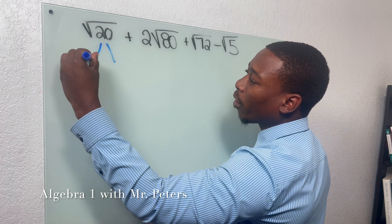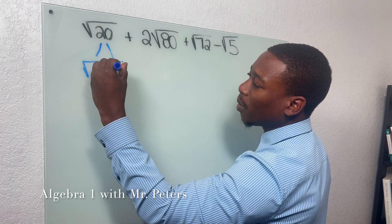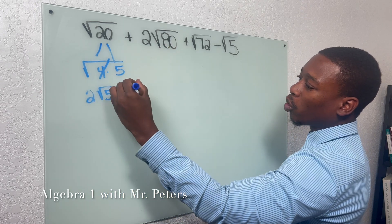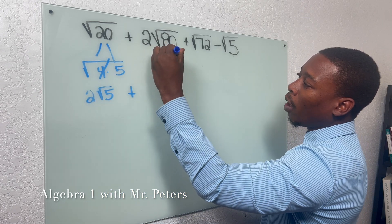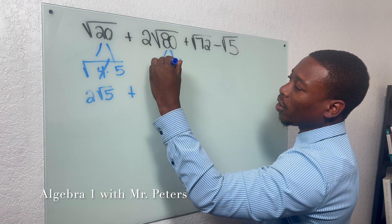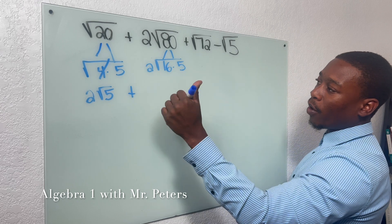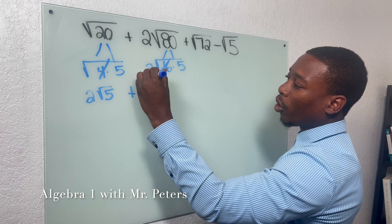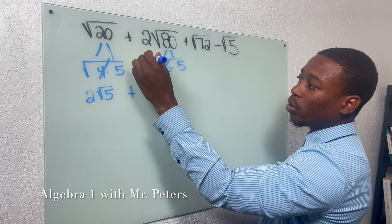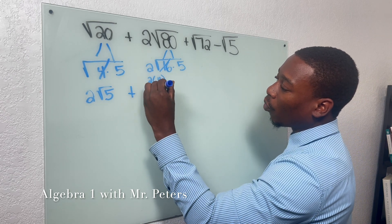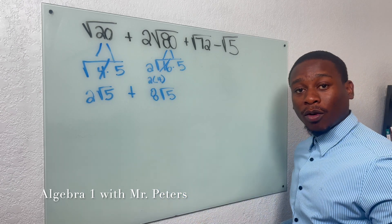So once we break in our first one, we can use 4 times 5, which breaks down to 2 radical 5. When we go to our second radical, I know that I can use 16 times 5 to break this down. Just remember that when 16 comes out, we're going to multiply its square root times its outside number. So we're going to have 8 radical 5 for our second radical.